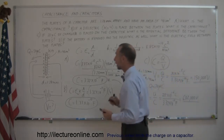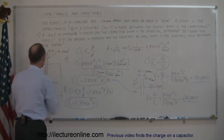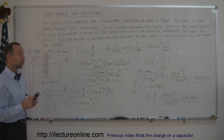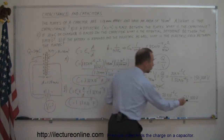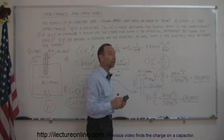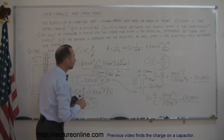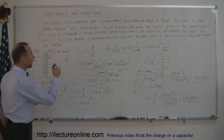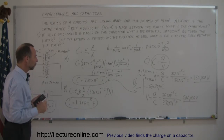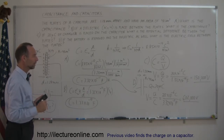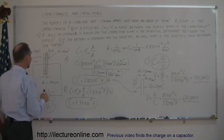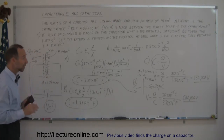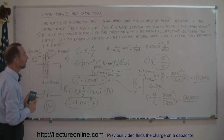By removing the dielectric, we increased the potential difference to 602,000 volts — which is four times the amount it held before, because we removed the dielectric constant K equals 4. In real life, you'd want to stay far away from a capacitor with 600,000 volts across it, but this is just an example. We still haven't found the electric field.